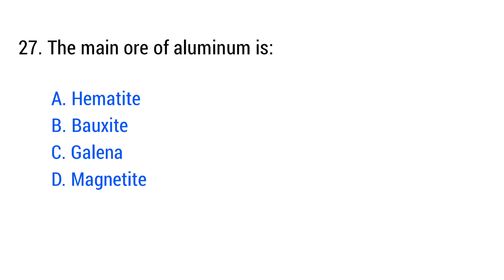Question number 27. The main ore of aluminium is? The right answer is option B: Bauxite.